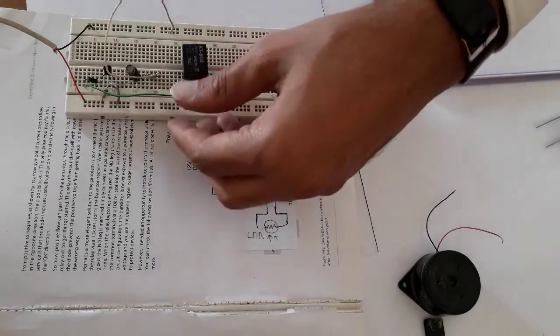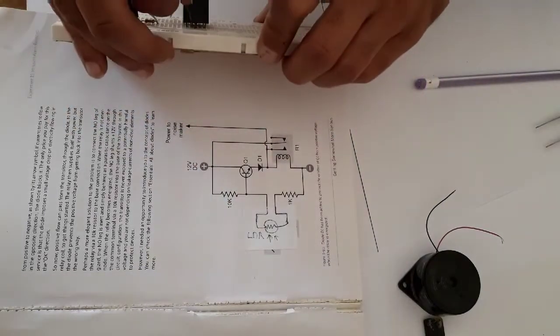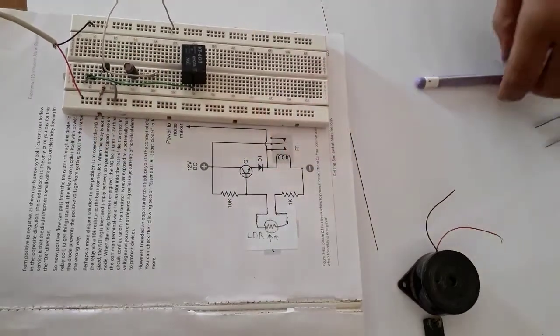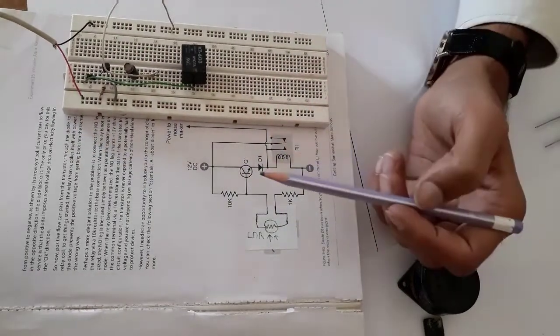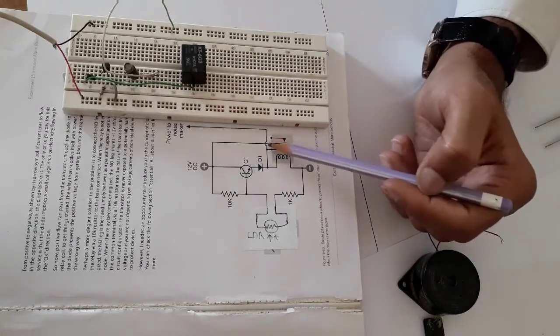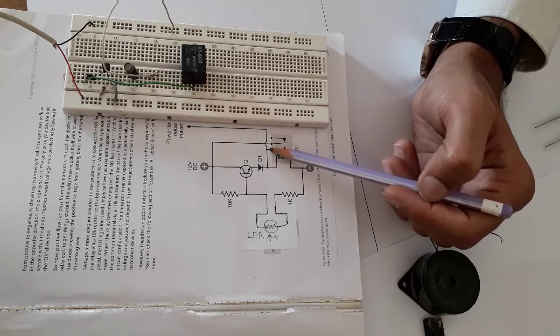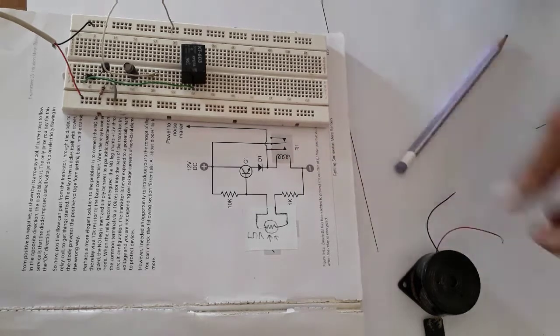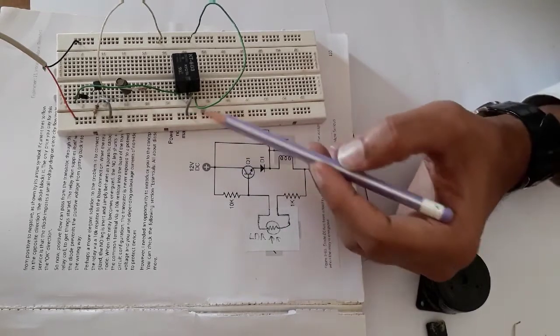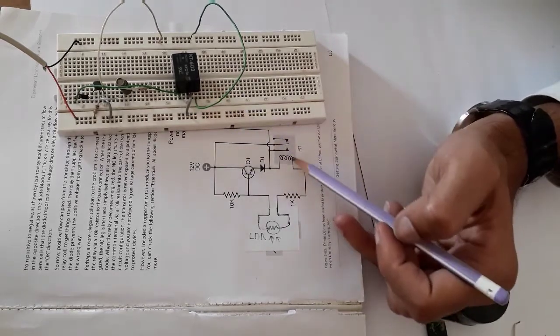Now the trigger of the relay will be with this positive terminal. Connect one of the pins of this relay's coil with this NO pin. Let's check out the connections whether they are well placed or not, so that we don't get an error in the end.